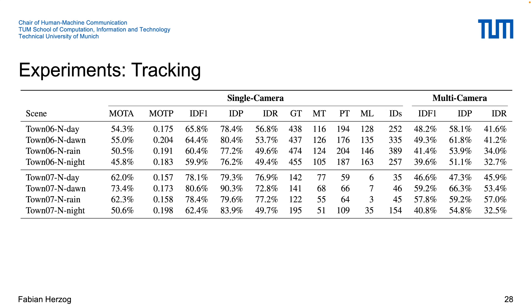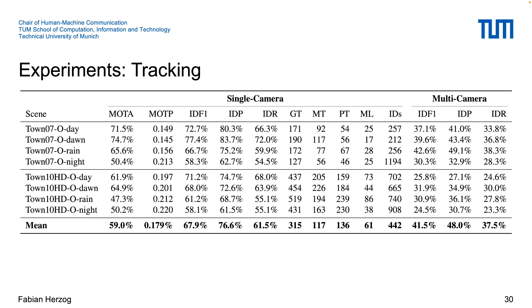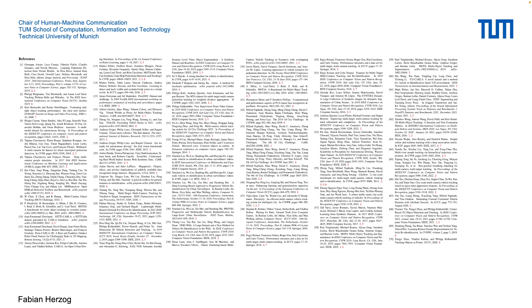For the tracking results, we used our entire test set and performed single-camera tracking with DeepSort, using the YOLOX detections and FastReID network trained earlier. Multi-camera tracking results were obtained from those single-camera tracklets using a methodology called EiCityFlow, proposed for the CityFlow dataset. In total, on our entire test set, we report an average of 59% multi-object tracking accuracy for single-camera tracking and 41.5% IDF1 score for multi-camera tracking, providing a solid baseline for experiments on SynthiHECL. The entire dataset and code, including all models and configurations, are publicly available. Thank you very much for your attention.